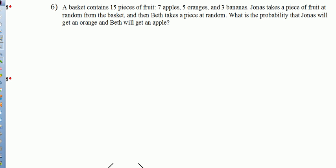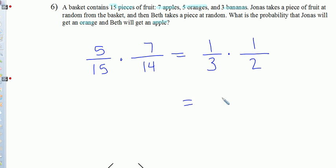Number 6 here. We've got a basket with 15 pieces of fruit: 7 apples, 5 oranges, and 3 bananas. Jonas will take a piece of fruit at random from the basket, and then Beth will take a piece at random. What's the probability that Jonas will get an orange, and then Beth will get an apple? Notice Jonas did not put that orange back. The probability that we'll draw an orange first is 5 out of the total 15, times, once that's gone there's only 14 pieces of fruit left. The probability that Beth will pull an apple is 7 out of 14. 5/15 reduces to 1/3, and 7/14 is 1/2. So 1/3 times 1/2 is 1/6. The probability that Jonas will draw an orange and then Beth will draw an apple is 1/6.